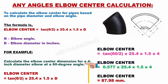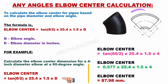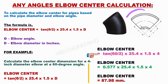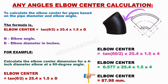Calculate the elbow center dimension for a 4-inch diameter elbow at a 60-degree angle. Applying the formula: Elbow Center = tan(60/2) × 25.4 × 1.5 × 4 = tan(30°) × 25.4 × 1.5 × 4 = 0.577 × 25.4 × 1.5 × 4. The elbow center for a 60-degree angle is 87.98 millimeters.